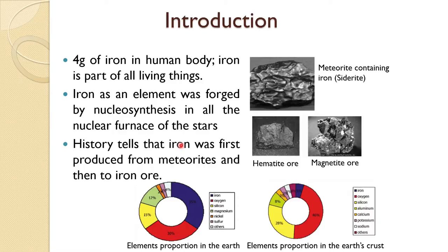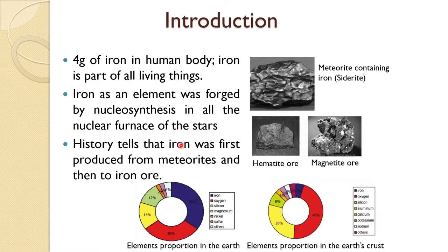Iron as an element was formed by nuclear synthesis in all the nuclear furnaces of stars. If you read about the evolution of stars you will come to know iron is formed by nuclear synthesis. History tells that iron was first produced from meteorite and then from iron ore. In fact, the name of iron comes from it being called a holy metal, and in old days they said the metal fell from the sky.